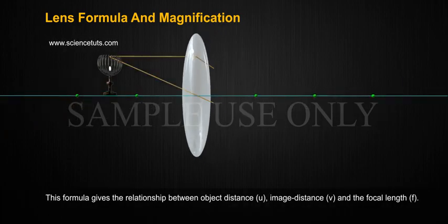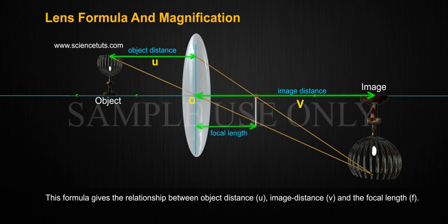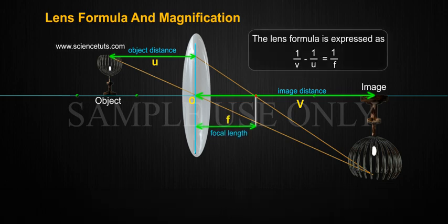This formula gives the relationship between object distance U, image distance V, and the focal length F. The lens formula is expressed as 1 by V minus 1 by U equals to 1 by F.